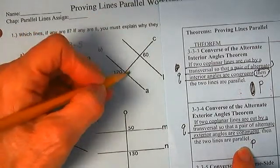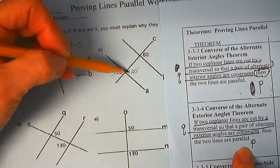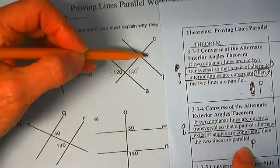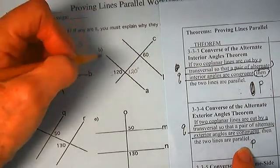These are verticals, so this is 120. These are not congruent. These are not congruent. These lines are not parallel.